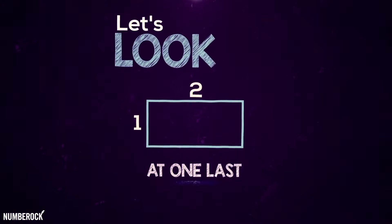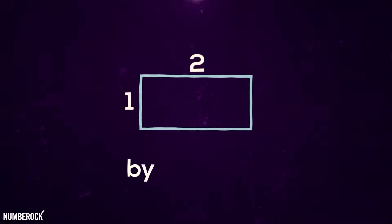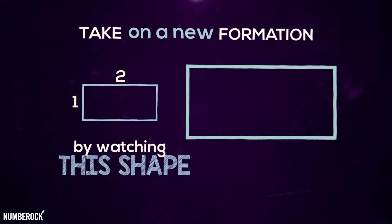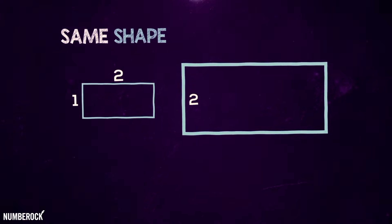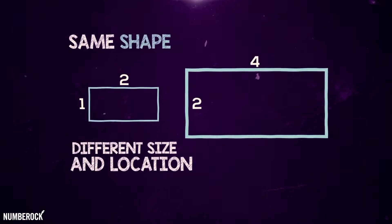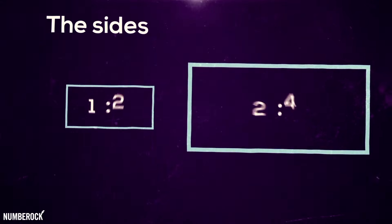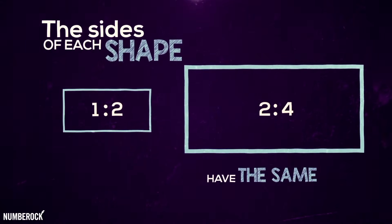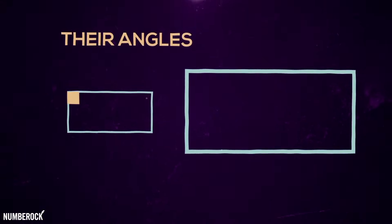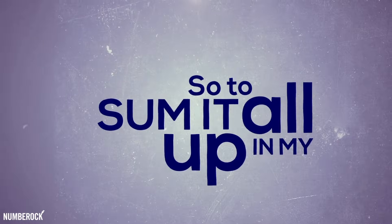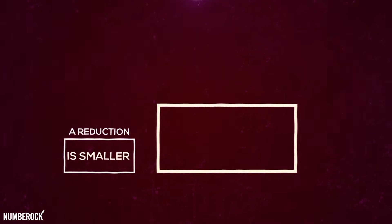Let's look at one last transformation by watching this shape take on a new formation. Same shape, different size and location — the name for this is a dilation. The sides of each shape have the same ratios. Their angles are identical, they're on the nose.